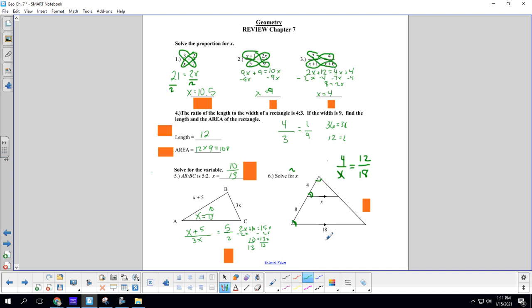So then we're going to cross multiply. We have 4 times 18 is 72. Equals 12x. Divide both sides by 12. And 72 divided by 12 is 6. All right.